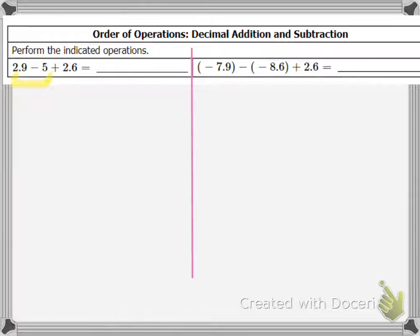So the first operation I see is 2.9 minus 5, so I'm going to do the subtraction first. Now 2.9 is smaller than 5. So if I'm doing 2.9 and I'm trying to subtract 5, I should understand that I'm going to end up with a negative number because 2.9 is smaller than 5.